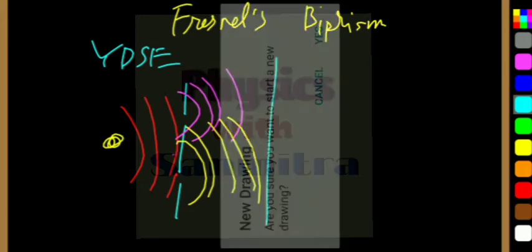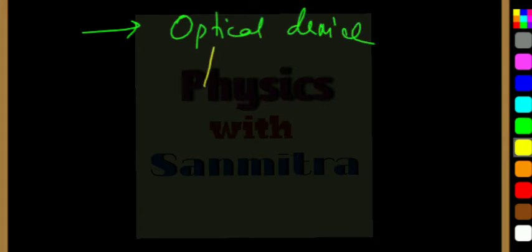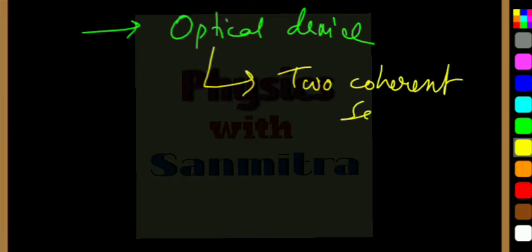Now in this method, by the use of Fresnel's biprism, we are doing the same thing. This is an optical device to produce two coherent sources.